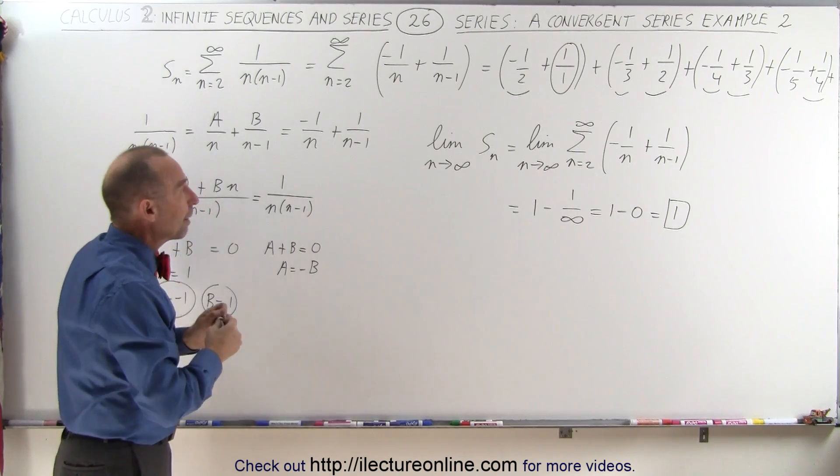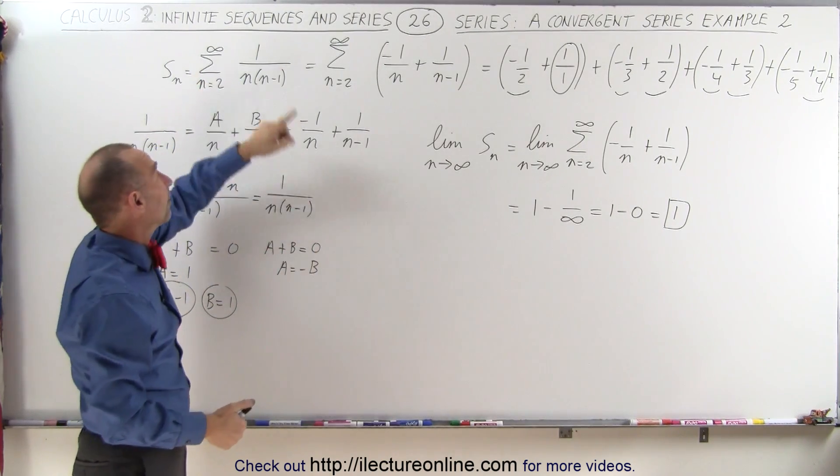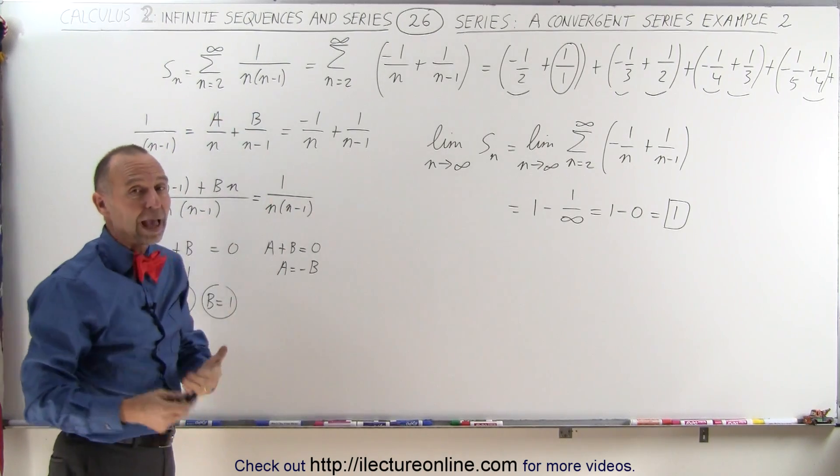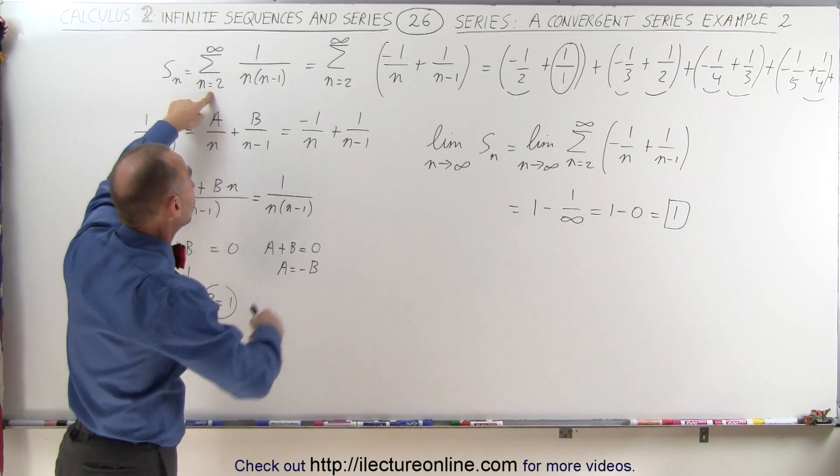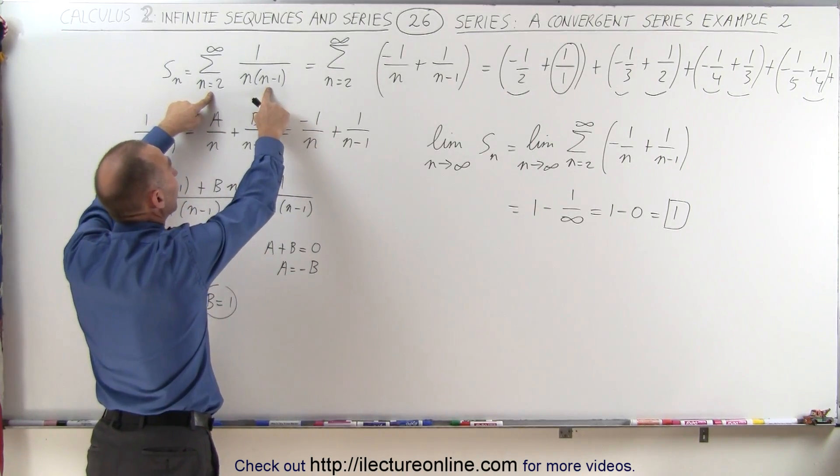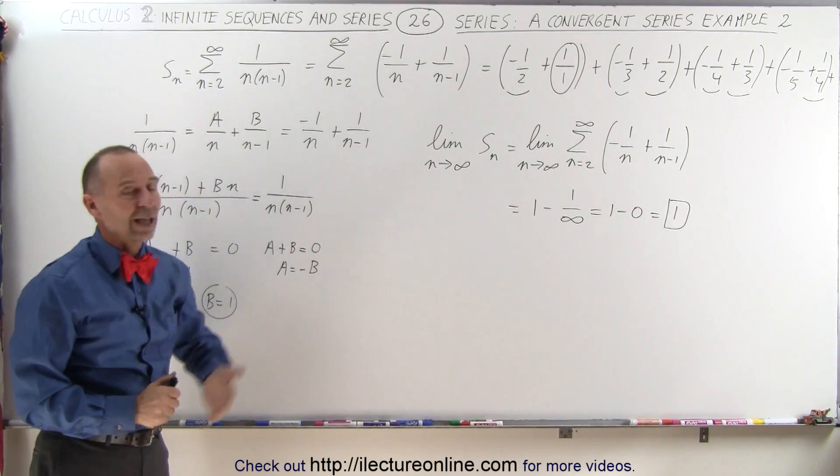This becomes 1 minus 0, or simply 1. Just like what we saw in the previous video, by using the same technique with something that looks quite different—instead of having 1 over n times n plus 1, we have 1 over n times n minus 1, but starting at n equals 2 because we cannot start at n equals 1—we end up with the same infinite series and the same end result.